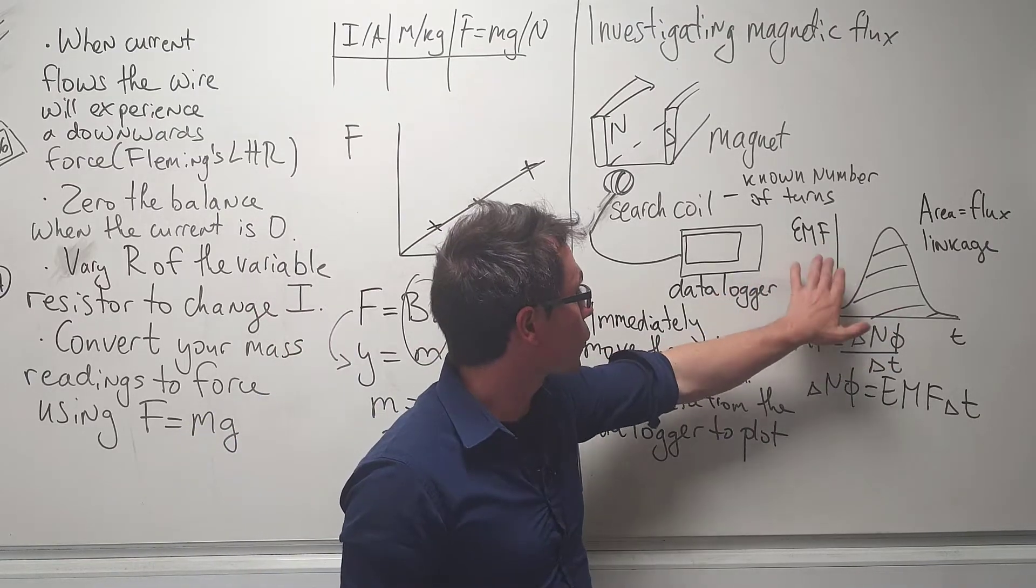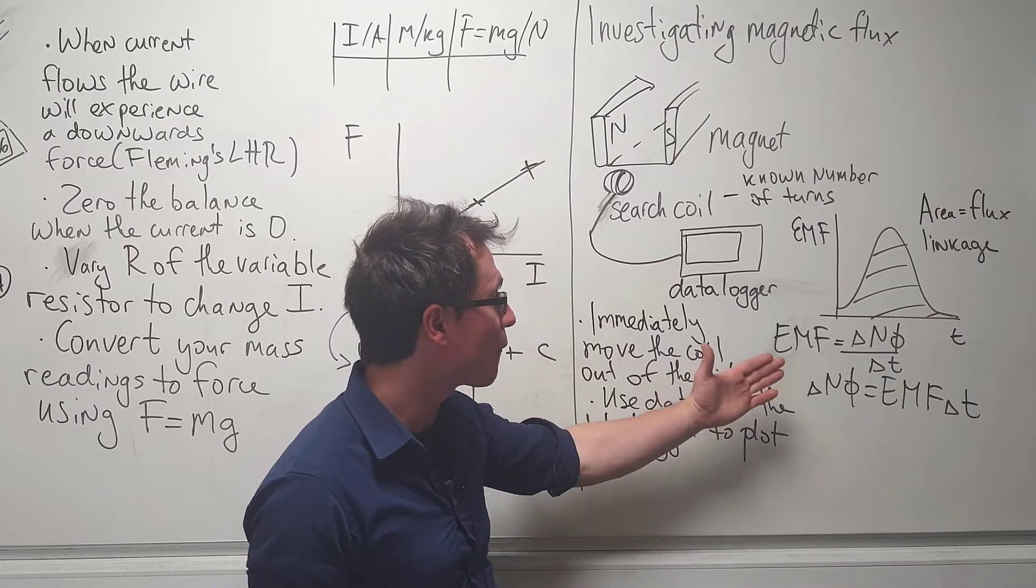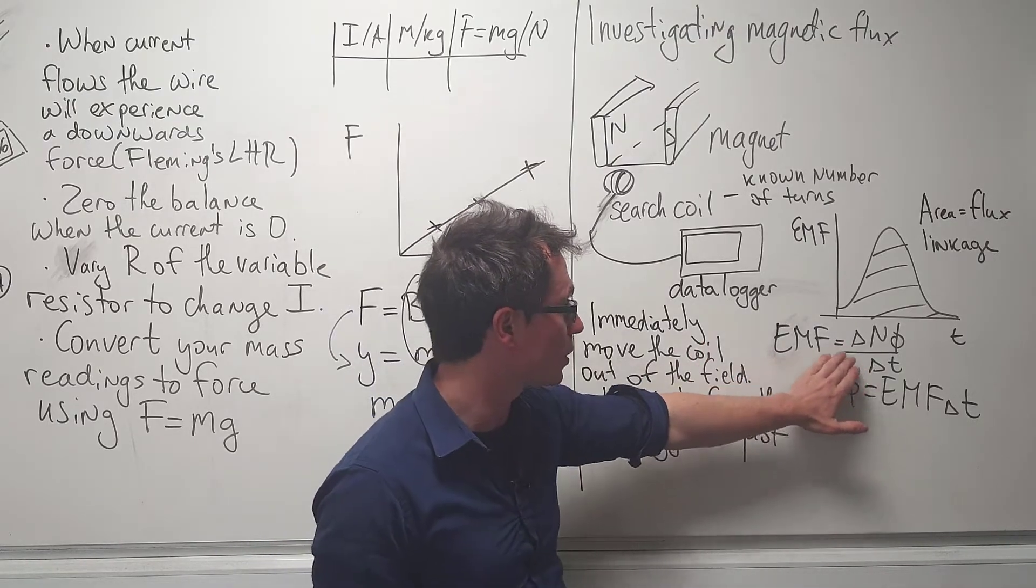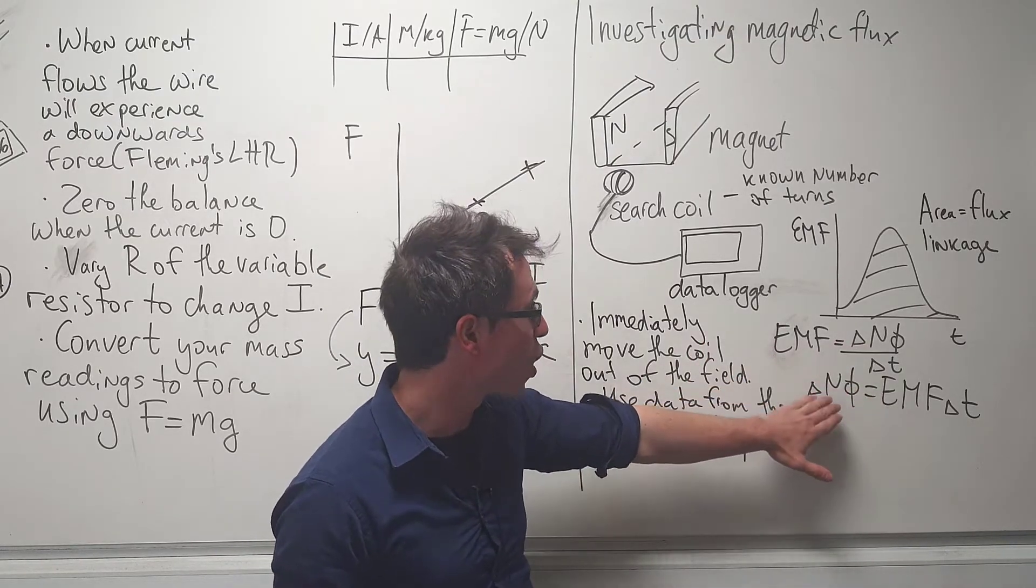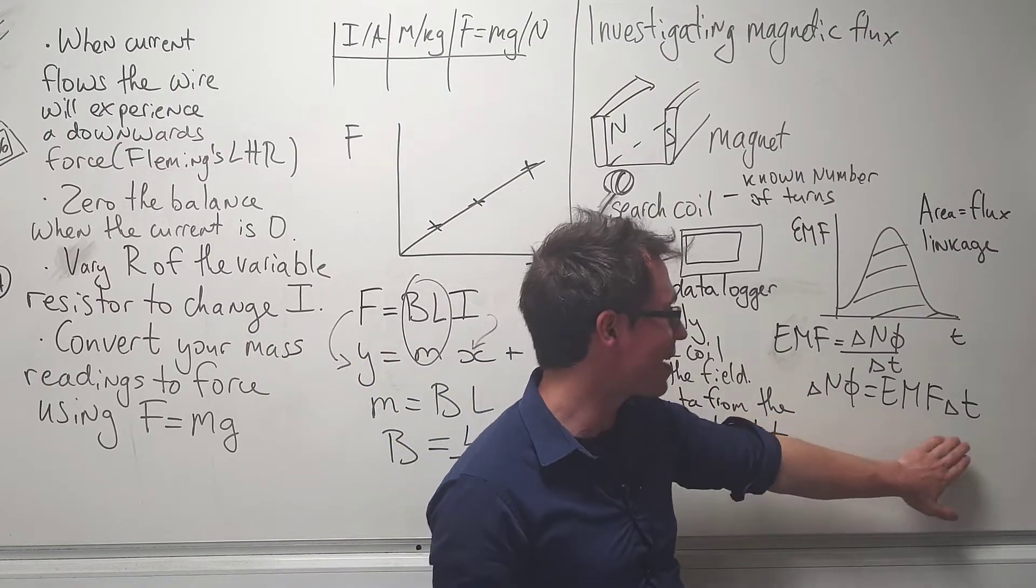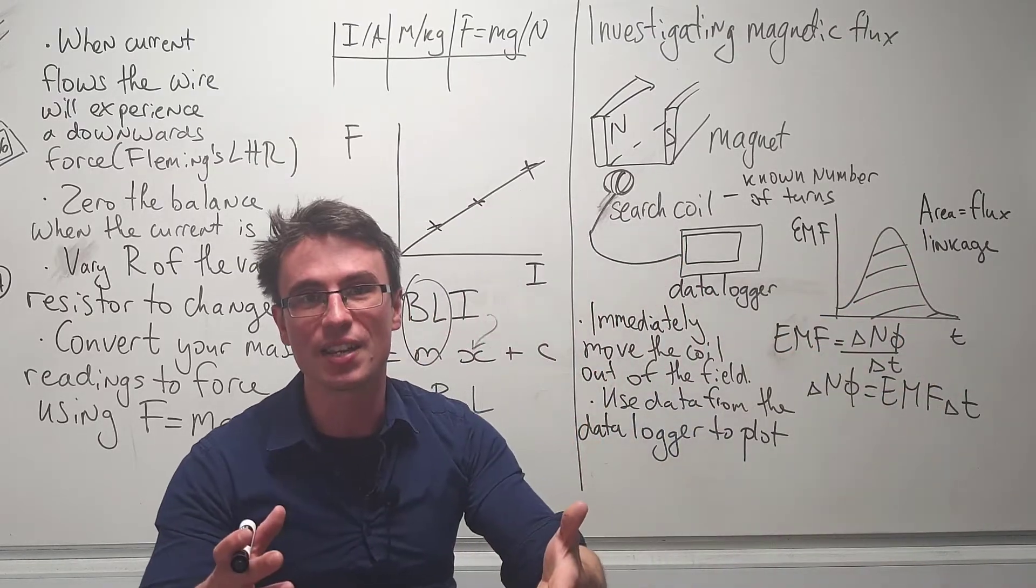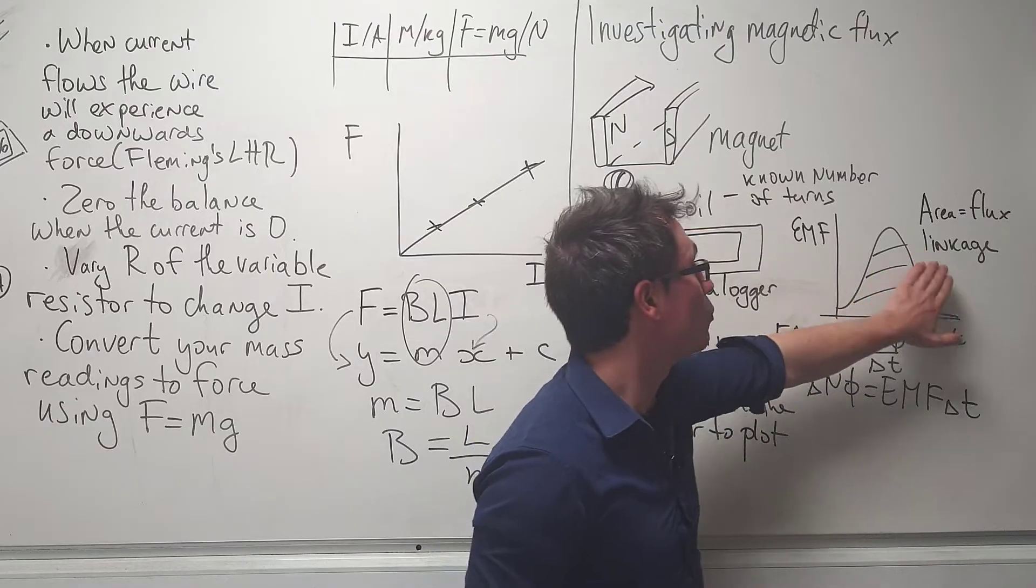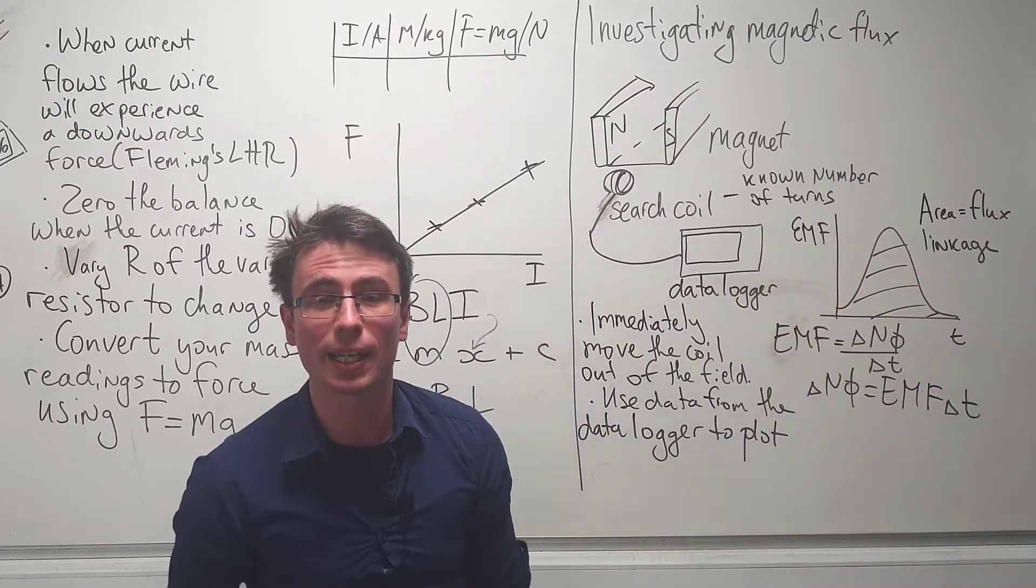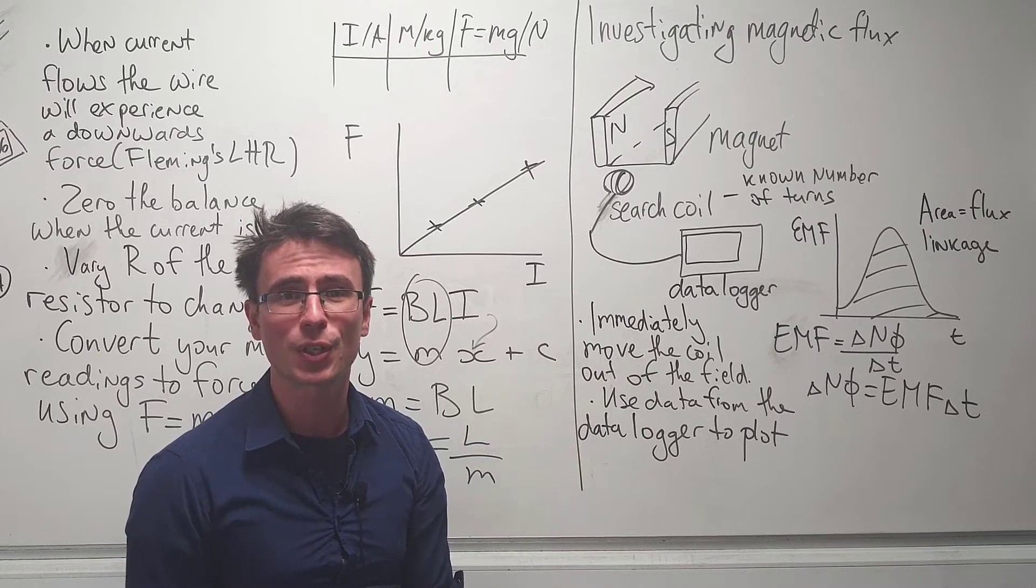Typically there will be a graph of the EMF against the time. By using Faraday's law, EMF equals the rate of change of magnetic flux linkage, our change of magnetic flux linkage is found by multiplying the EMF times the time interval, which makes this the area underneath the graph. The area will give us the flux linkage, and if we're interested in the magnetic flux, all we need to do is divide by the number of turns.